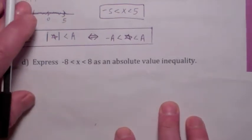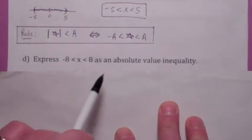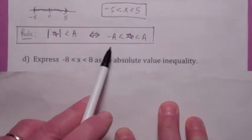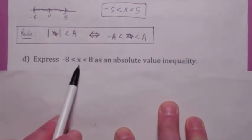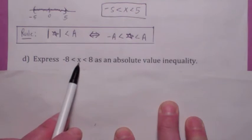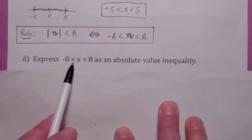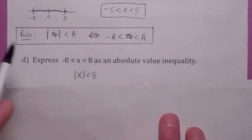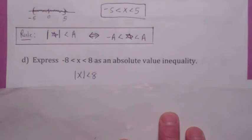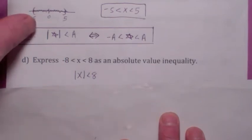So if you wanted to go backwards here, what if you were given a double inequality? If you're given a double inequality, how would you express this as an absolute value inequality? If x is within eight units of zero — between negative eight and eight — then that just means the absolute value of x is less than eight.